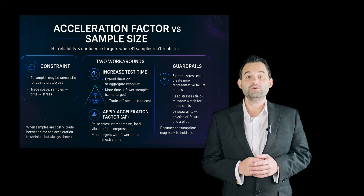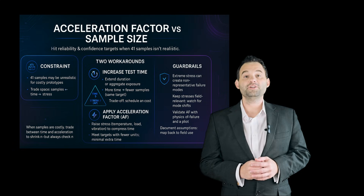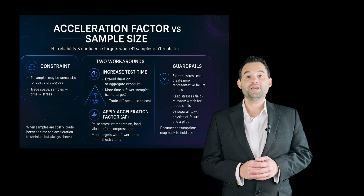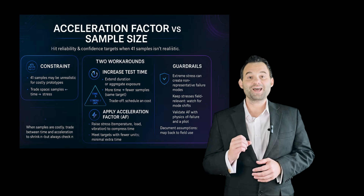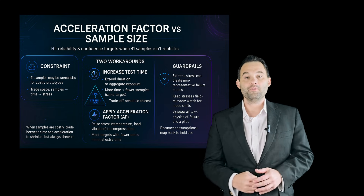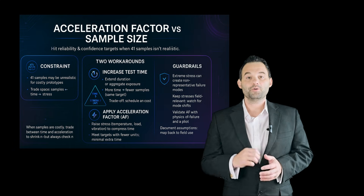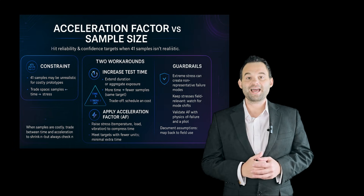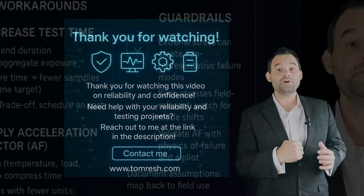So what is the workaround for additional time? Applying an acceleration factor. By increasing the stress level for your test, you can decrease the test time, which helps you meet your reliability and confidence target with fewer samples and without adding significant test time. Use the acceleration factor carefully, as there are limits — if you go too high, say with an extreme test temperature, you could end up creating unrealistic failure modes not seen during actual field or customer usage. So accelerate carefully.